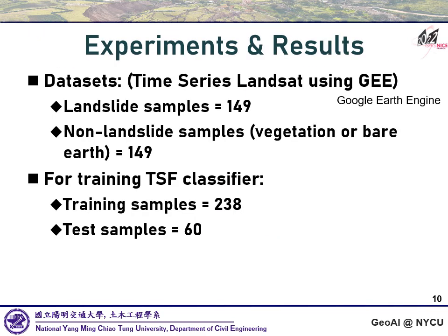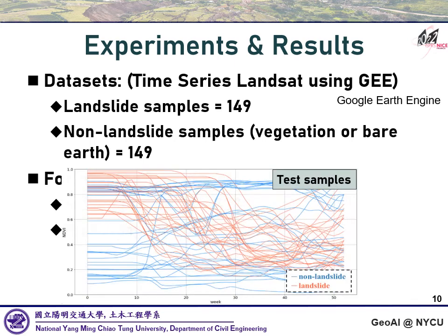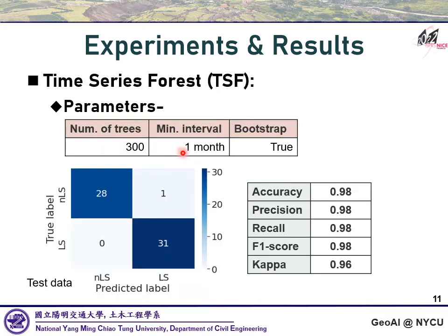In our dataset, there are 149 samples each for landslide and non-landslide. The non-landslide samples include areas that haven't been cleared — such as areas always covered in vegetation and areas that are always bare earth. Since TSF is a machine learning algorithm, training and test samples are 238 and 60 respectively. These are the time series of our test samples. TSF training parameters are shown in the table. Only one misclassification occurred and all evaluation indicators show fairly good performance.